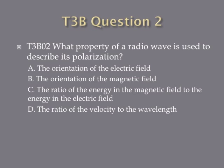Question 2. What property of a radio wave is used to describe its polarization? A, the orientation of the electric field. B, the orientation of the magnetic field. C, the ratio of the energy in the magnetic field to the energy in the electric field. Or D, the ratio of the velocity to the wavelength.